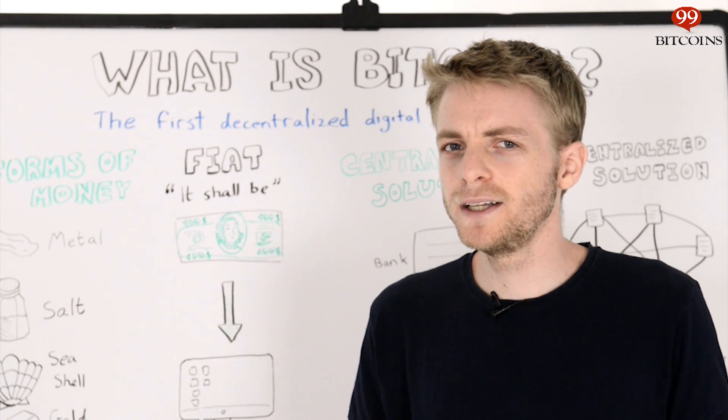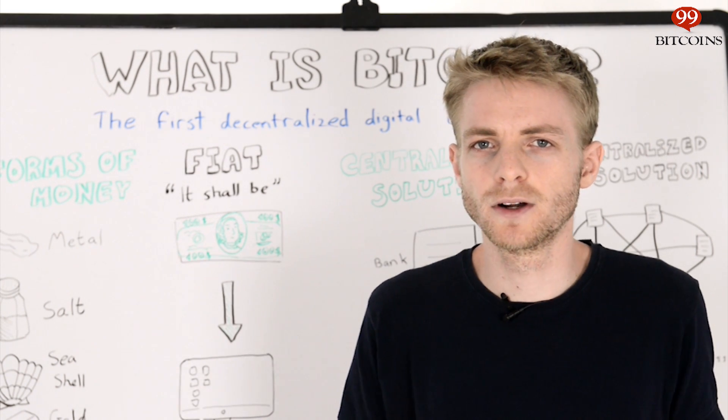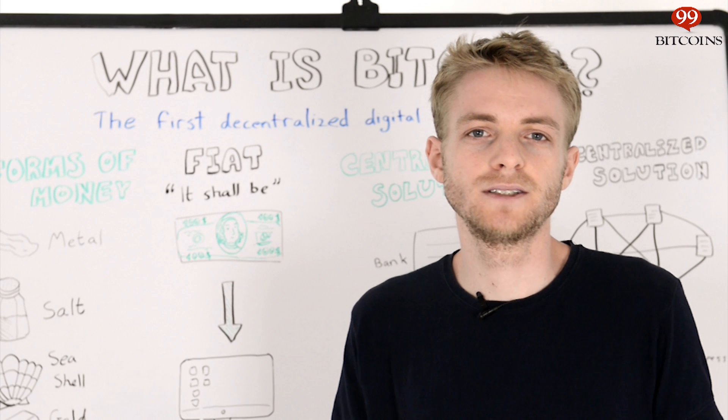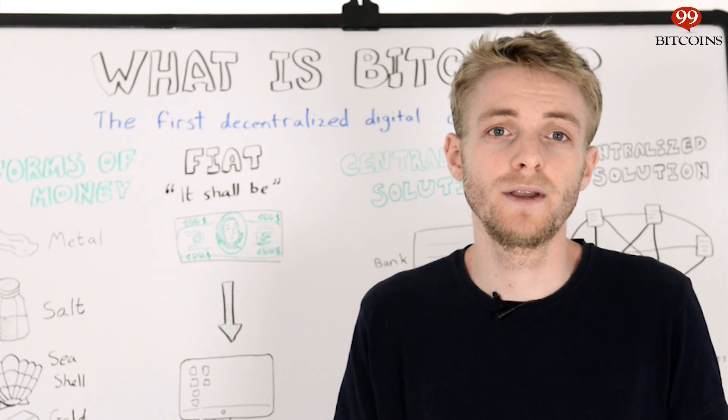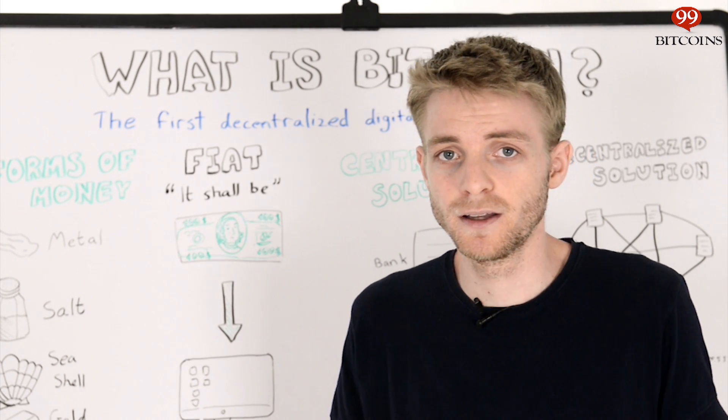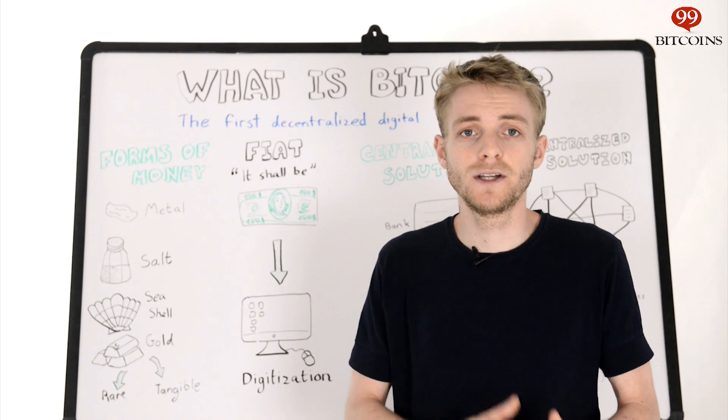Wait a minute, so if money today is digital how does that even work? I mean if I have a file that represents a dollar, what's to stop me from copying it a million times and then having a million dollars? This is called the double spend problem.